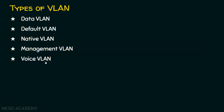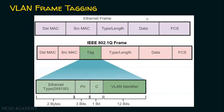Next, we will see VLAN tagging. If this is the ethernet frame — which we are already familiar with — it has the destination MAC address, source MAC address, the type or length field, the data, and the frame check sequence for error detection. Between the source MAC address and the type field, we will have a tag that is responsible for identifying the VLAN. This tag contains the ethernet type of 2 bytes, a priority field, and a VLAN identifier of 12 bits. This tagging is called IEEE 802.1Q frame tagging.